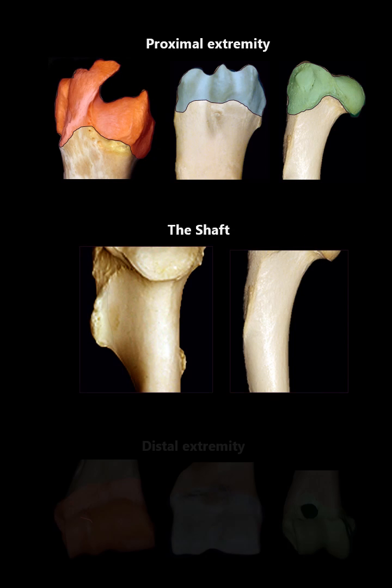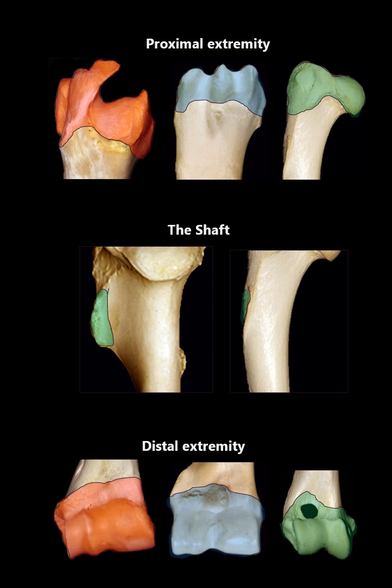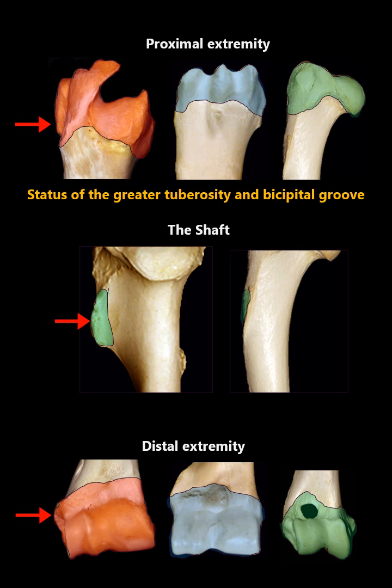Unique anatomical features in the two extremities and the shaft of the humerus which allow identification of the animal species include the status of the greater tuberosity, bicipital groove, deltoid tuberosity, and the fossae of the distal extremity.